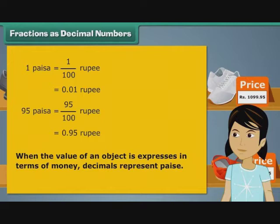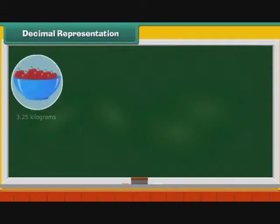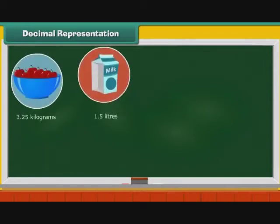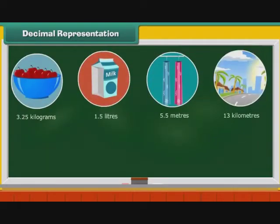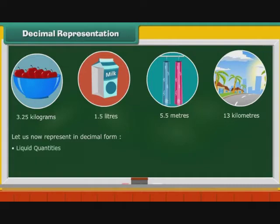When the value of an object is expressed in terms of money, the decimal represents paise. In real life, we use decimals extensively to express quantities and lengths. Let us now represent in decimal form: liquid quantities, solid quantities, and lengths.